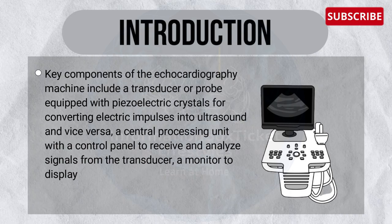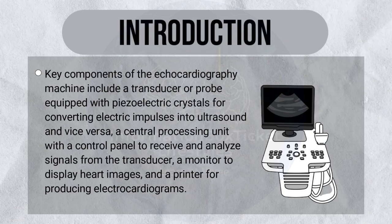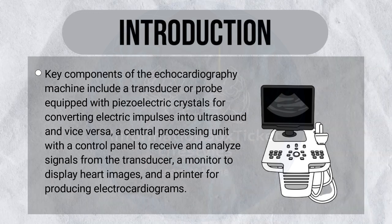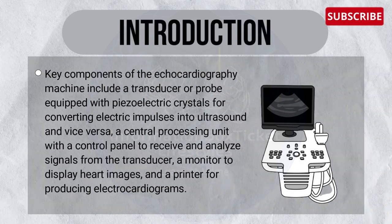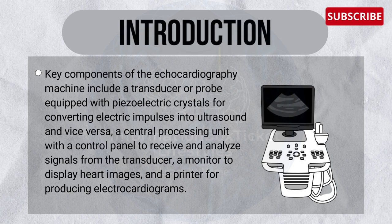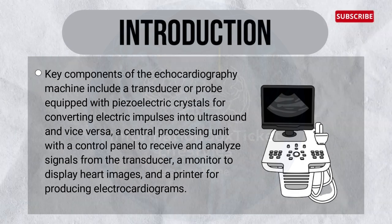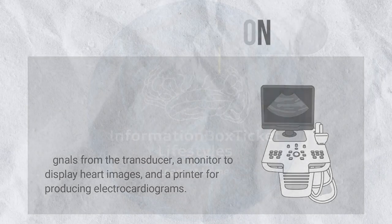Key components of the echocardiography machine include a transducer or probe equipped with piezoelectric crystals for converting electric impulses into ultrasound and vice versa, a central processing unit with a control panel to receive and analyze signals from the transducer, a monitor to display heart images, and a printer for producing electrocardiograms.